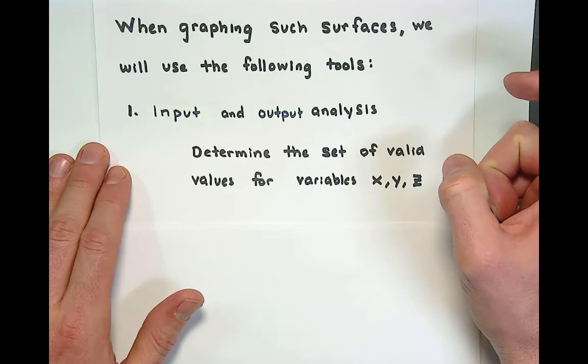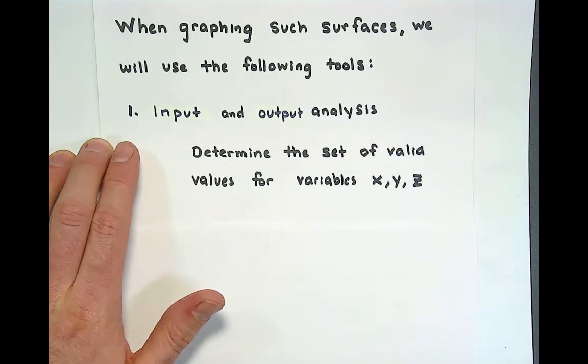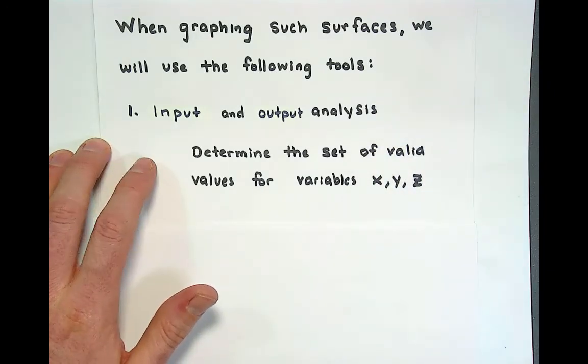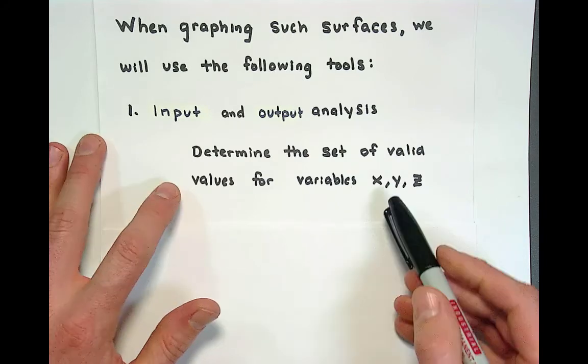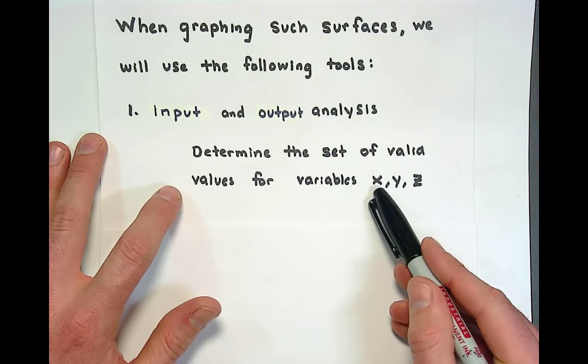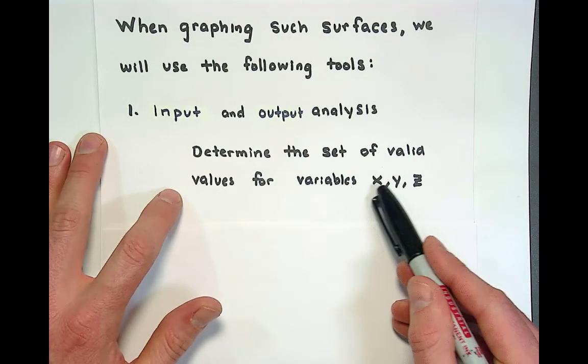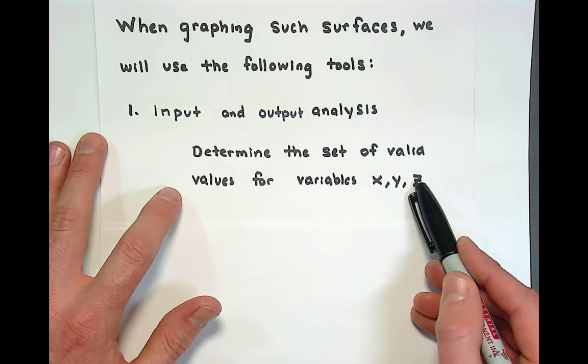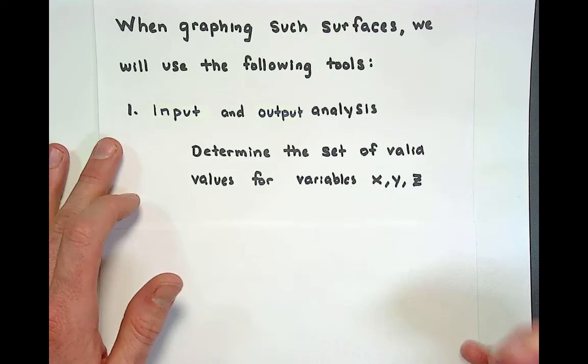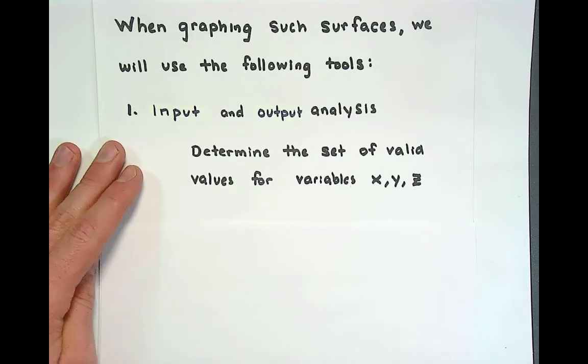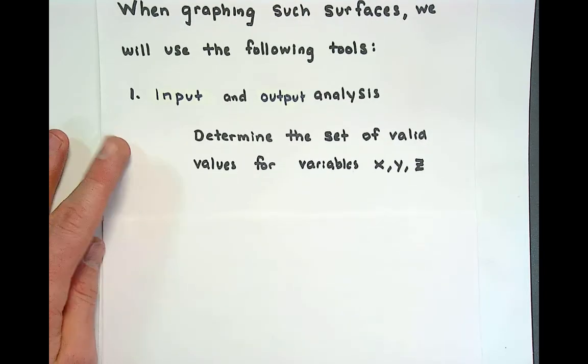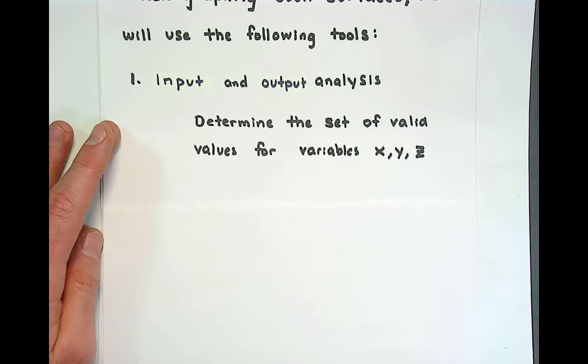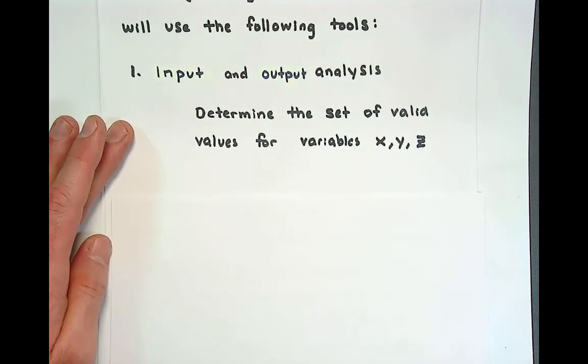When we're graphing quadratic surfaces we'll use a following set of tools to prime our brain so that we can best use computers. The first set of tools that we're going to use is called input and output analysis which is to think about if I'm going to graph my surface what are actually valid inputs x and y and valid outputs z. If these were functions you would call this the domain and range analysis.